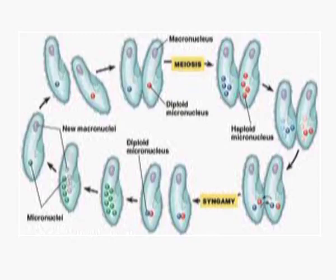Exchange of genetic material takes place through the protoplasmic bridge — genetic material moves from one paramecium to the other, and it is bidirectional. Further meiotic divisions then take place. Although sexual reproduction is occurring, it is different from higher forms in that two whole individuals are involved in the process.